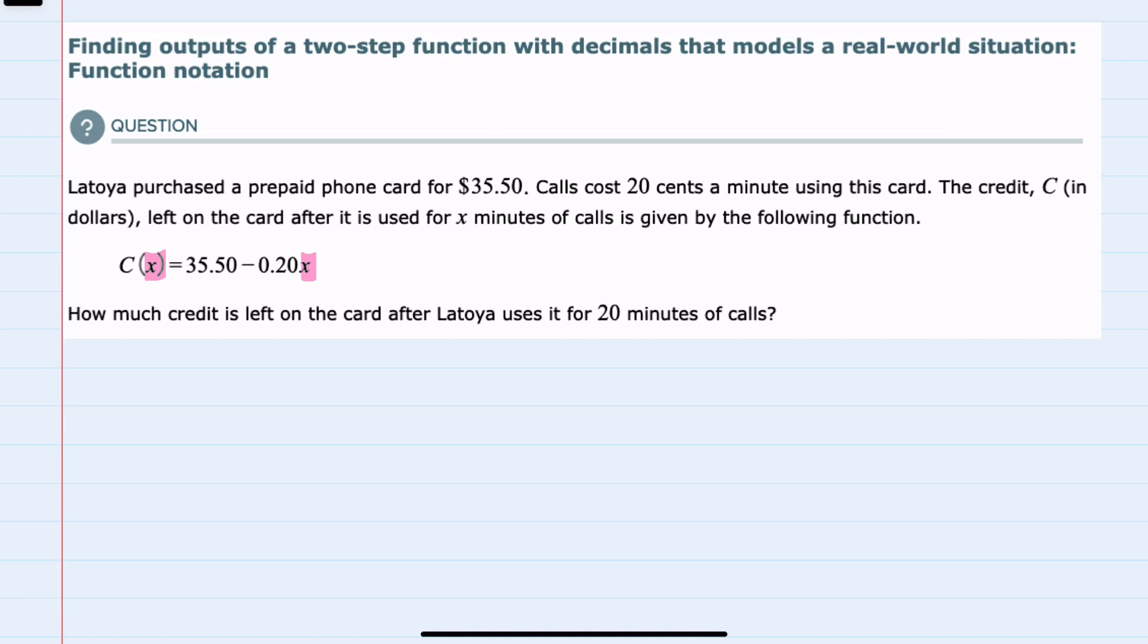the question of how much credit is left on the card after LaToya uses it for 20 minutes can be found by substituting 20 into C. So we will be replacing X with 20.